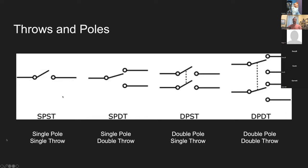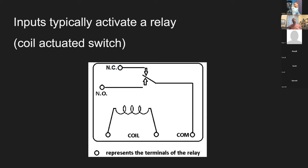For buttons like SPDT, you need to physically press them to change state. But if you have a digital system where you want something to change based on programmatic input — not a physical input — you can use a relay to energize a coil and then switch that relay.